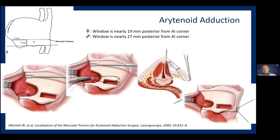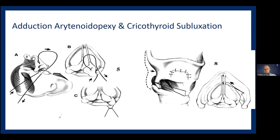The second arytenoid procedure is adduction arytenoidopexy, defined by Steven Zeitels, usually combined with cricothyroid subluxation. In that surgery, the arytenoid is repositioned and stabilized on the cricoid cartilage, the suture is passed, and then after dislocating the inferior horn of the thyroid cartilage, it is united with the anterior part of the cricoid cartilage — simulating the action of the cricothyroid muscle.